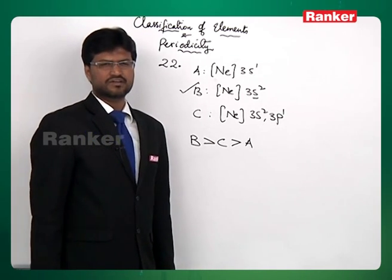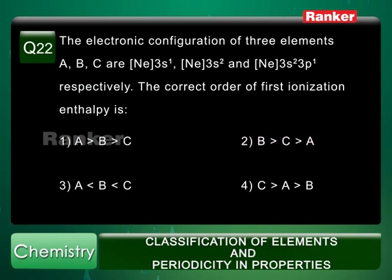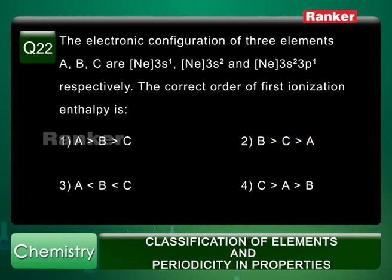The answer is the second option. The reason why B is greater than C is the extra penetrating power of the s-subshell when compared to the p-subshell.